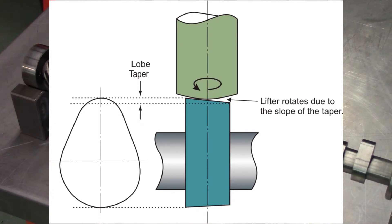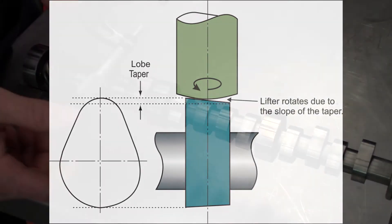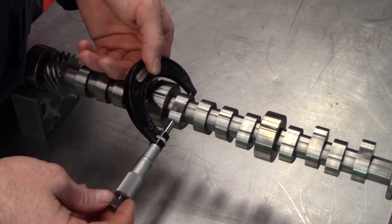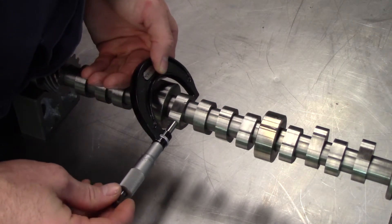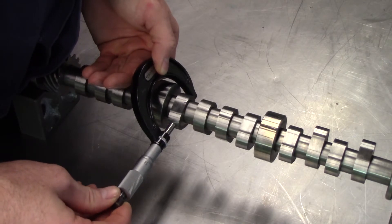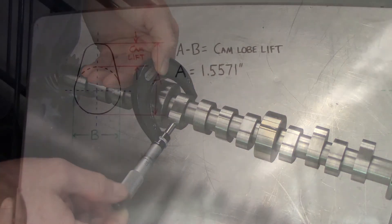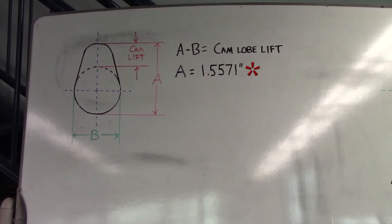In this example, we are measuring from the exact center of the lobe width. Using your micrometer, take a measurement across the largest part of the lobe. In this example, our measurement is 1.5571 inches. Record the result.